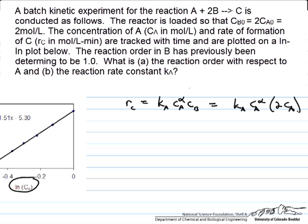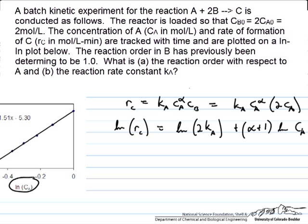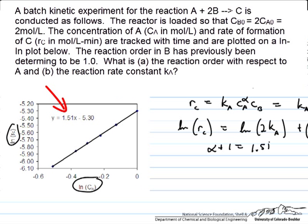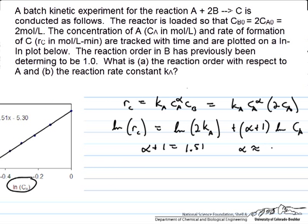Now we collect terms and take the logarithm of both sides. The log of RC equals the log of 2Ka — collecting those constant terms — plus alpha plus 1, collecting the two exponents from Ca to the alpha times Ca to the first power, times the log of Ca. This is a convenient form: the slope of a plot of log rate versus log Ca equals alpha plus 1, which has been determined from an Excel fit to be 1.51. Therefore, alpha is approximately one half.